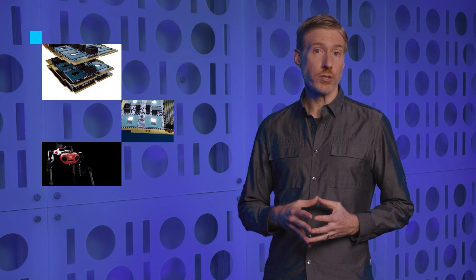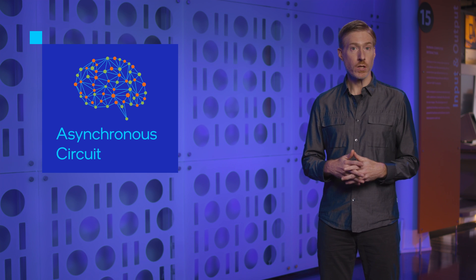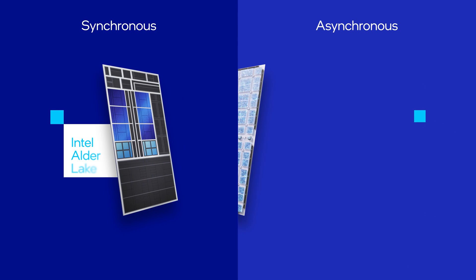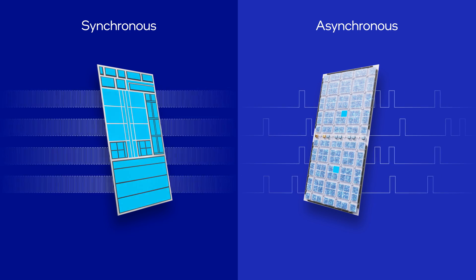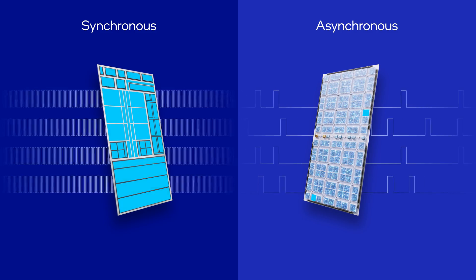Historically, many neuromorphic research chips have used analog circuits to replicate the membrane dynamics of biological neurons, but for many reasons relating to circuit density, precision, reliability, the field has generally moved to fully digital designs, at least for now. The brain is one massive asynchronous circuit, and a lot of neuromorphic chips, including our Loihi chips, are implemented using an asynchronous design style. Asynchronous circuits don't use free-running clocks and automatically stop consuming power when there's nothing to compute. Of course, this is a great match for spiking neural networks that are only sparsely active.